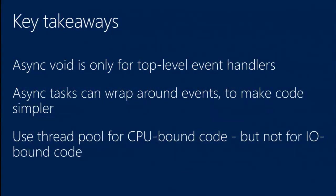The three core tips today are: first, async void — you want to use async void methods for top-level event handlers or constructs morally equivalent to them. Second, you can make tasks that wrap existing events, bridging the event-based world and the task-based world. Third, we'll talk about how to use the thread pool for CPU-bound code, and how to dispatch work to a background thread correctly.